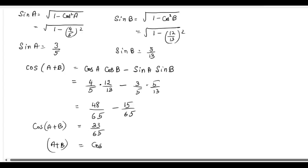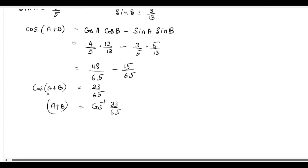So it will become cos inverse of 33 by 65. Now we got the RHS. Now initially we had substituted cos inverse of 4 by 5 as A and cos inverse of 12 by 13 as B.